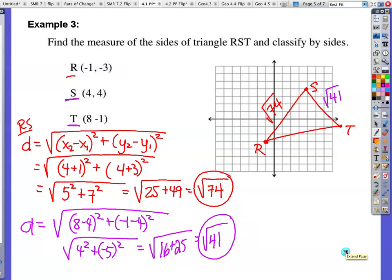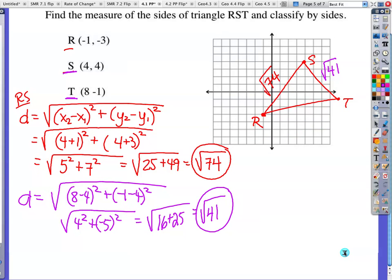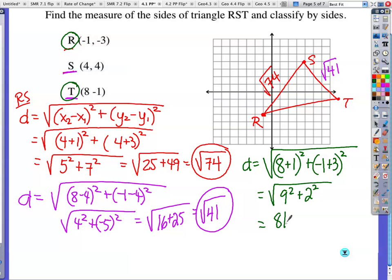Moving right along, I still have to find my third side. I mean, this could still be an isosceles triangle. Could it really be an isosceles triangle? Let's just see. Now I'm going to find the distance from R to T. So now I'm going to take d equals 8 minus negative 1. So I put down plus 1. And then I'm going to go negative 1 minus negative 3. So that's plus 3. Now I've got 9 squared plus 2 squared. 81 plus 4. Square root of 85 it looks like. So this is square root of 85, which means no sides are the same. So I have to classify it by its sides. If no sides are the same, I have that lovely scalene triangle.